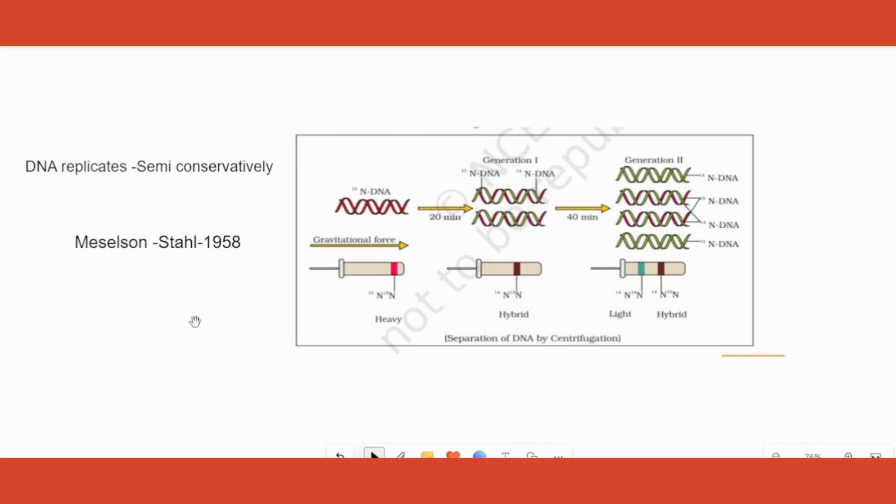But the medium in which the first group of bacteria were grown was having N15 as the nitrogen content in the medium. A group of bacteria called E. coli was made to grow on a medium—medium is nothing but a place where it can grow and absorb nutrients from.